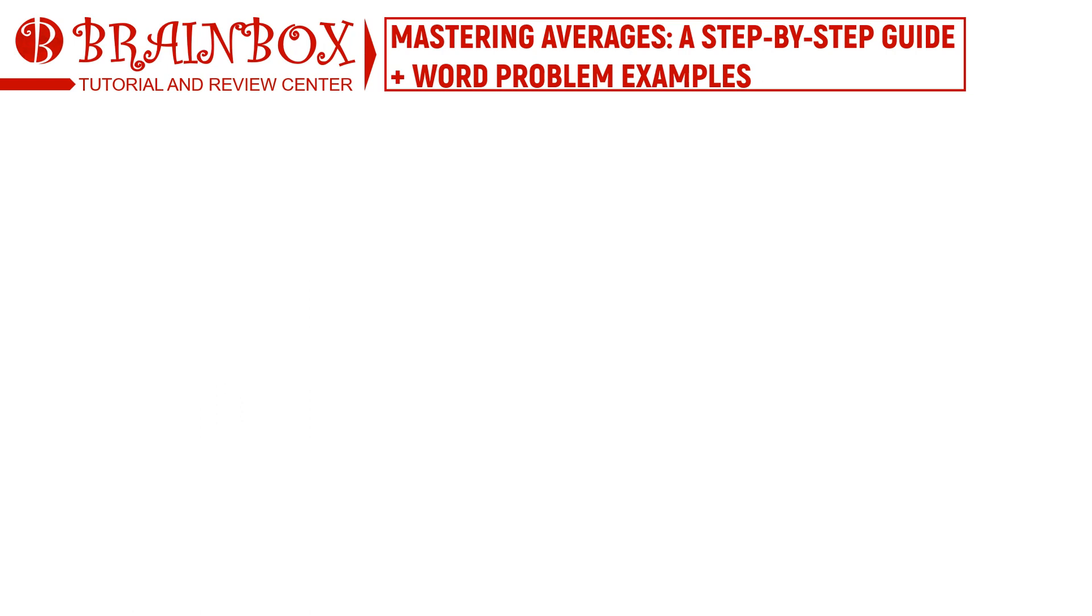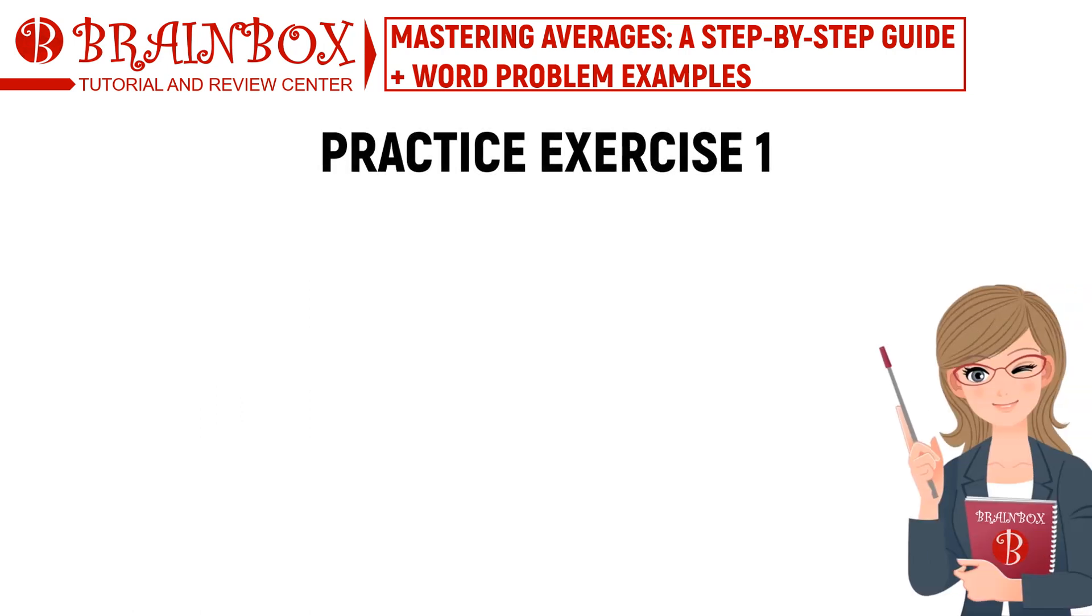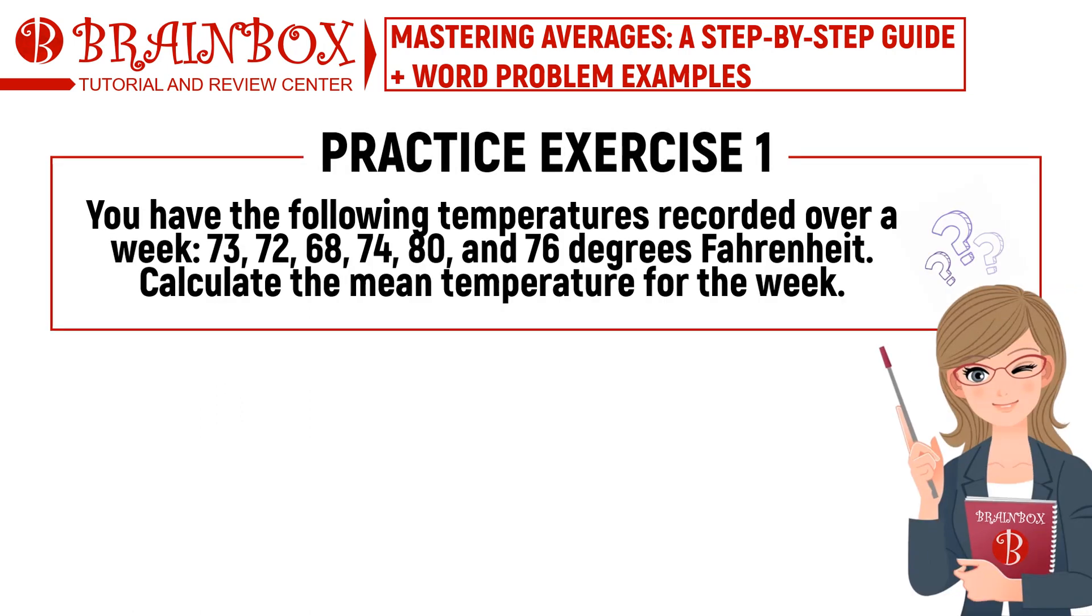You have the following temperatures recorded over a week: 73, 72, 68, 74, 80, and 76 degrees Fahrenheit. Calculate the mean temperature for the week. Timer starts now.